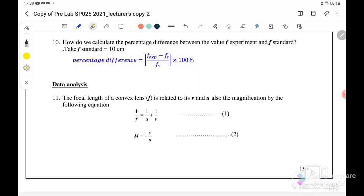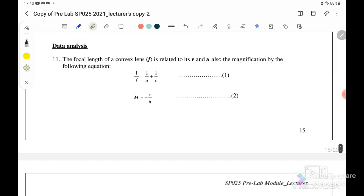Number ten: how do we calculate the percentage of difference? Percentage of difference is we take the experimental value minus the actual value or the standard value, over standard value. And usually we will use the modulus because we just want the difference between the experimental and standard value, and remember to times 100.